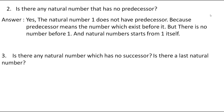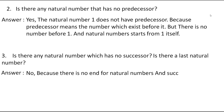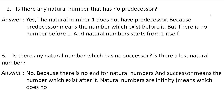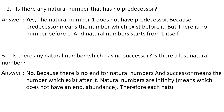The third question is: is there any natural number which has no successor? Is there a last natural number? The answer is no, because there is no end to natural numbers, and successor means the number which exists after it. Natural numbers are infinite — they do not have an end. Therefore, each natural number has a successor.